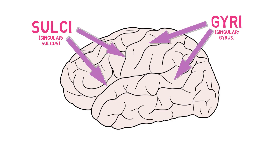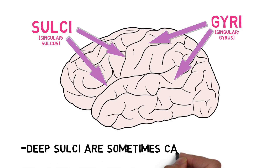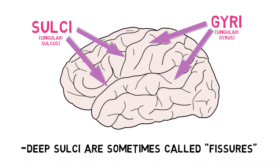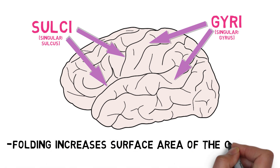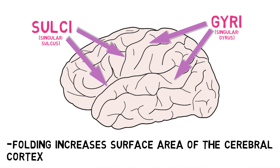Particularly deep sulci are sometimes referred to as fissures. The folding of the cerebral cortex dramatically increases the surface area of the cortex, allowing more neurons to fit within the limited volume of the skull. While the pattern of sulci and gyri varies between individuals, certain sulci and gyri appear more consistently and serve as important landmarks of the cerebral cortex.